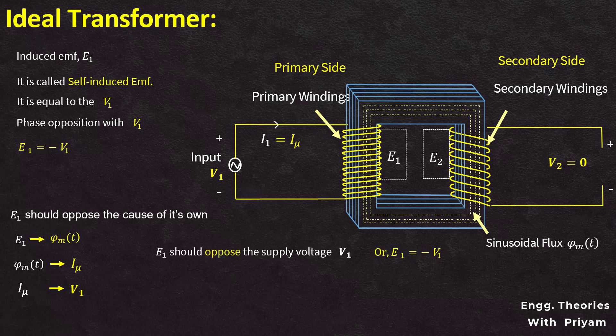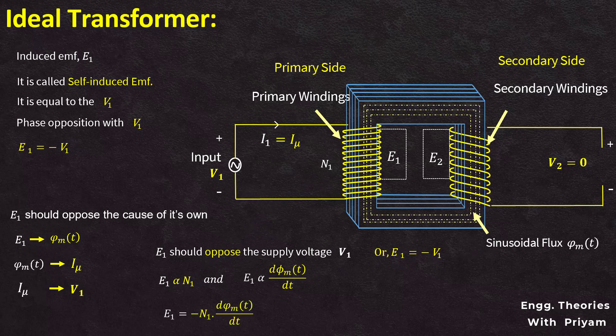In other words, e1 is equal to minus V1. This supply-induced EMF e1 is proportional to the number of turns in the primary winding, n1, and the rate of change of flux, d(phi_mt)/dt. So we can write the self-induced EMF e1 is equal to minus n1 × d(phi_mt)/dt.